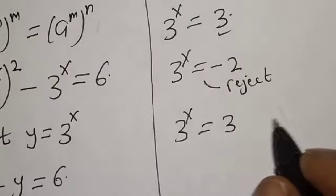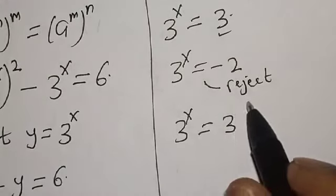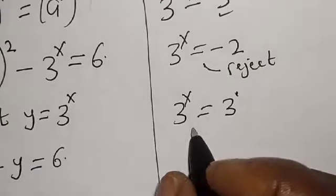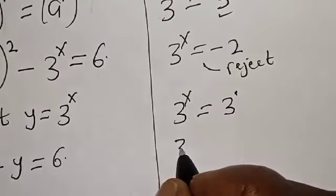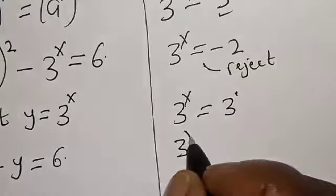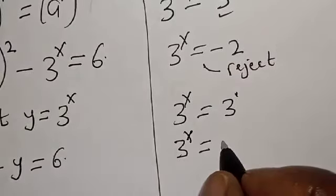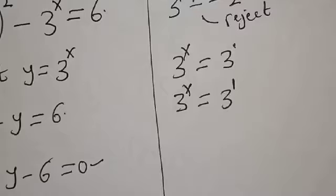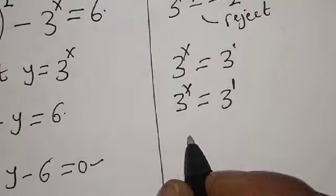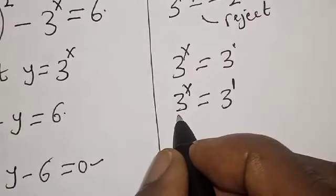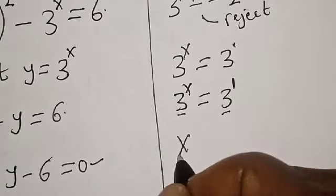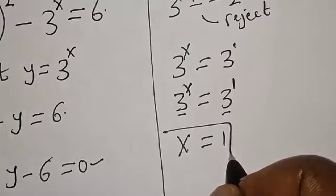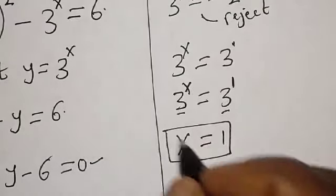Remember that 3 is the same thing as 3 raised to power 1. So we have 3 raised to power x is equal to 3 raised to power 1. They have the same base, therefore x is equal to 1. That is the value of x.